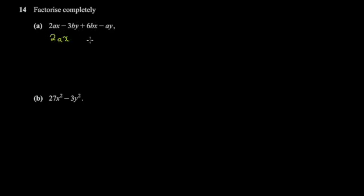You have to match two brackets and then you can factorize accordingly. For example, this one and this one don't have anything in common really. But then this one and this one actually do have something in common. So we can just quickly rearrange — sometimes you have to rearrange depending on what you're given. So here I'm going to write this one first.